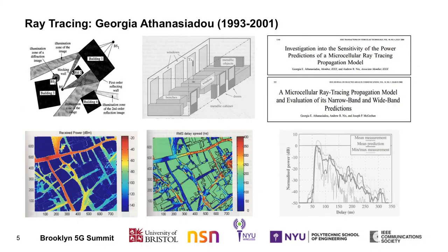My work in ray tracing goes back to 1993 with my first PhD student, Giorgio Athanasiou. Giorgio worked on our group's second generation image-based ray tracers. These models had a number of limitations: the databases were quite simple by today's standards, the terrain had to be flat, propagation was mainly limited to the horizontal plane, and we weren't modelling polarisation. But notwithstanding, we could still generate some impressive outputs. You can see in the coverage maps here we were able to predict power and RMS delay spread as a user walked throughout a city environment.